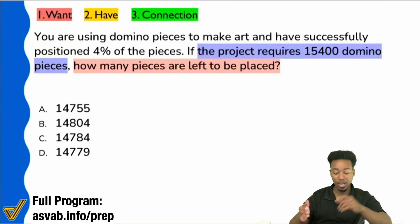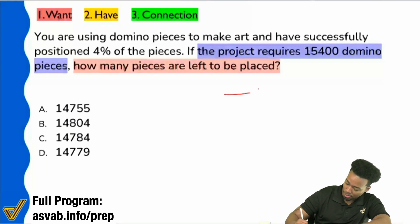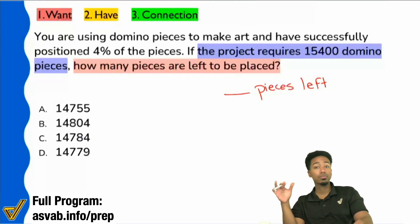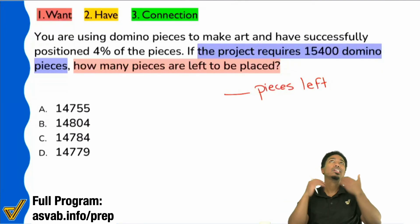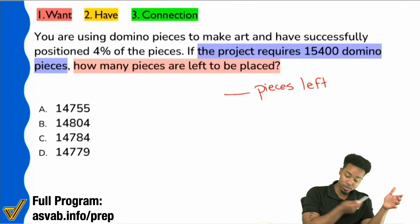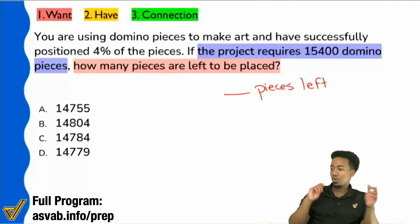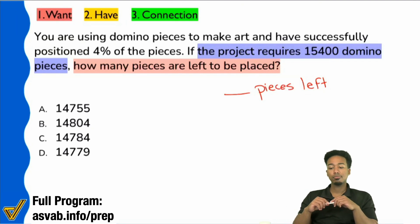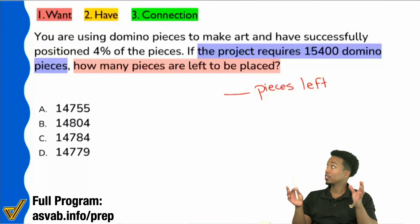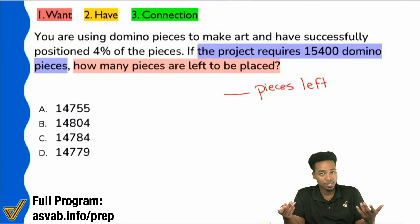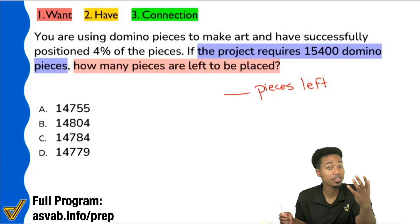Let me just write that down in English: blank pieces left. That's all we're looking for — how many pieces we have left. Is it true that if we were there in person and we saw the box that said you need 15,400 pieces, could you effectively count how many pieces you have left? 15,400 pieces — ain't nobody want to do that. But theoretically, yes. So this problem is solvable. A lot of times we tend to look at word problems and freak out, but this is doable.